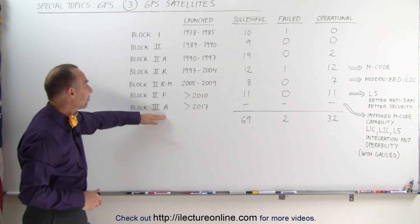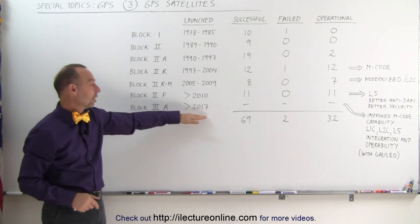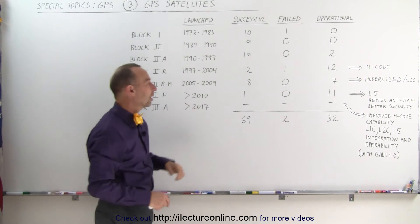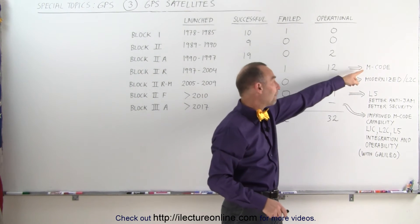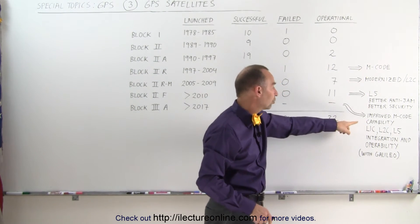The Block IIIA satellites haven't started launching yet. They'll start launching about 2017. Obviously none of them are in space yet, but it will give them improved M code that was introduced with the Block IIR satellites.